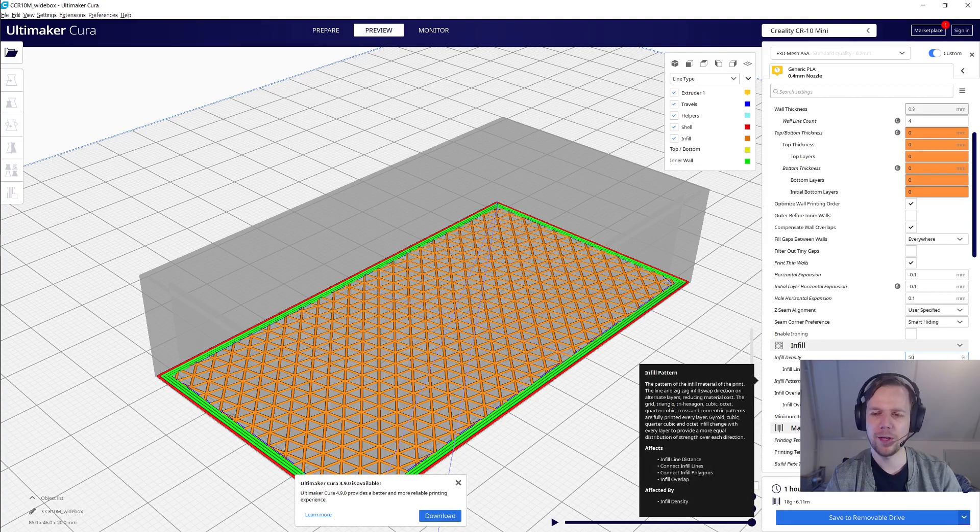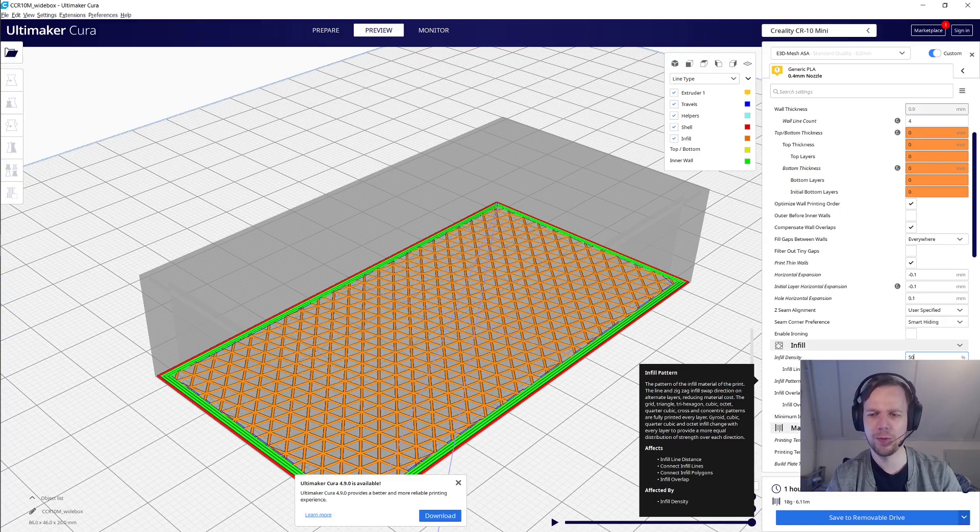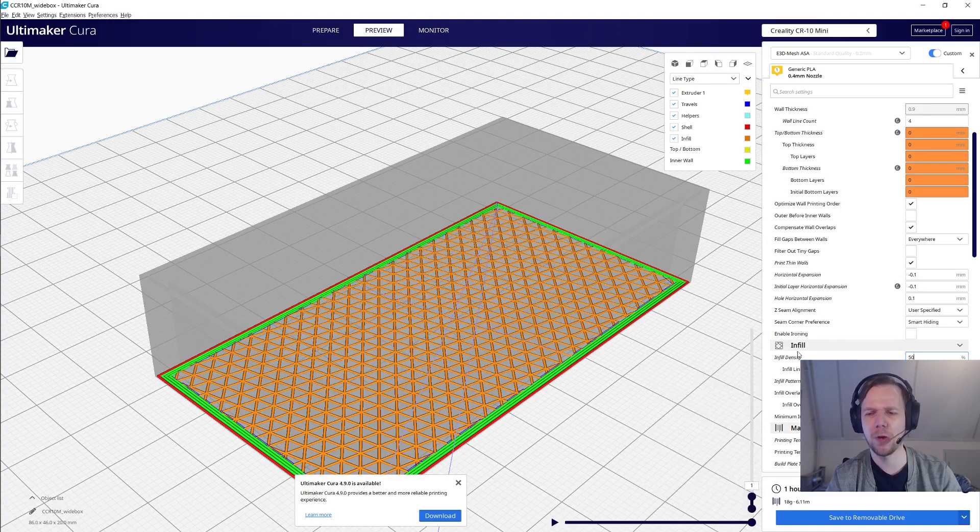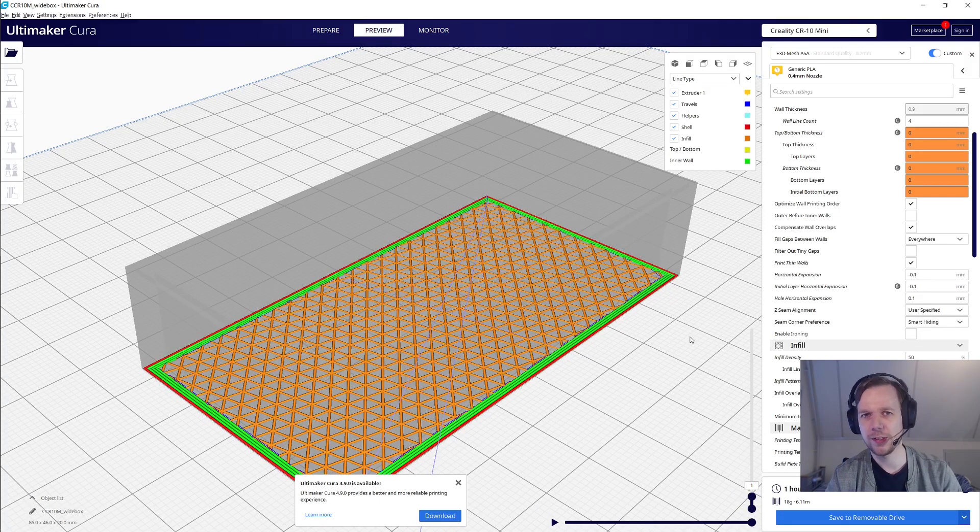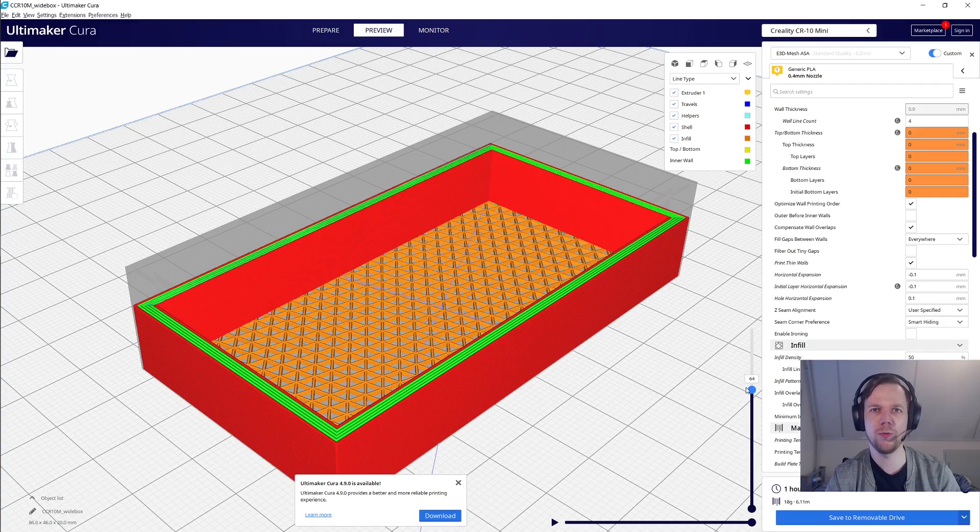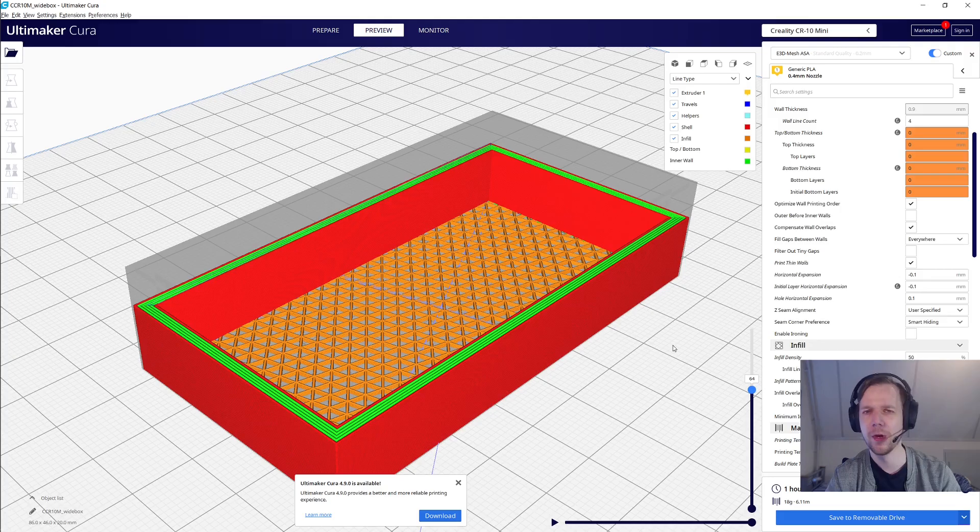Now I initially went for lines infill to save on a little bit of material, but that gave a really floppy end result, so in the end I just settled on triangles. Another interesting idea is to use gyroid infill, because in that case the walls too can become infill, and those then become permeable as well. So I'll leave a link to a relevant Reddit thread down below.